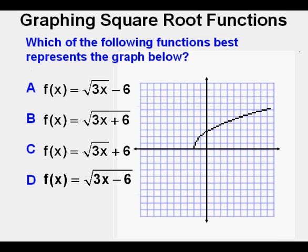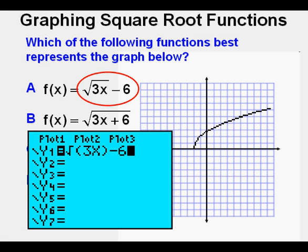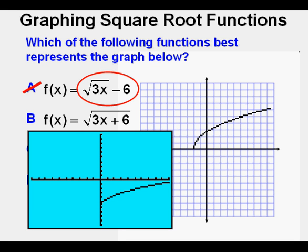Now we'll look at some problems, and here's the first problem. Which of the following functions best represents the function graphed below? The easiest way to do this problem and be sure about it is to use a graphing calculator. Here's answer A, the square root of 3x minus 6. Then we graph it. We see that it doesn't look like the graph function is anything like the original, so we cross it off.